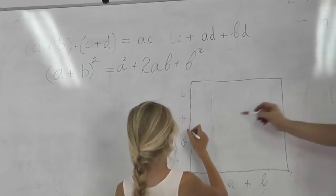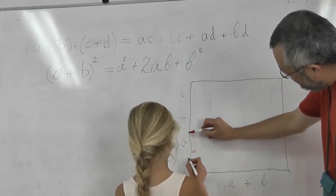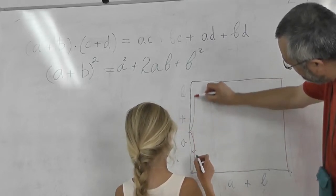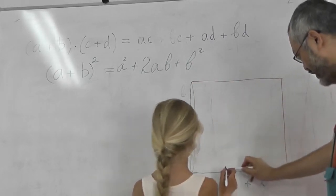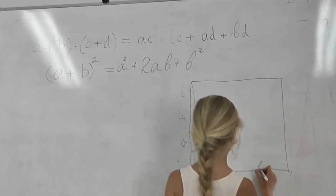So let's decide for example that this is a, this thing. And this is b. And here as well. A and b.